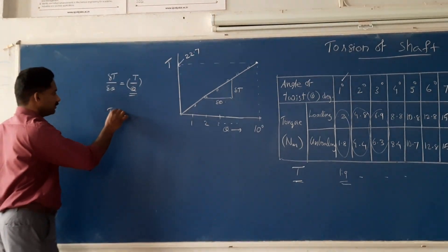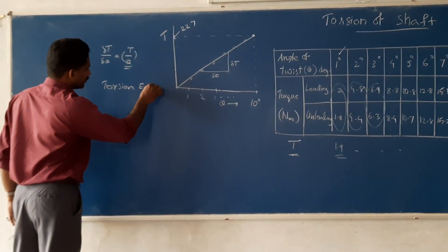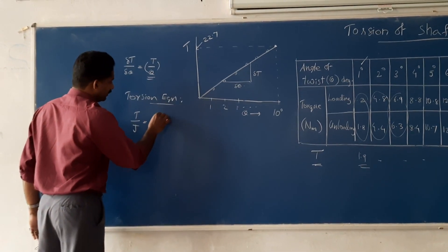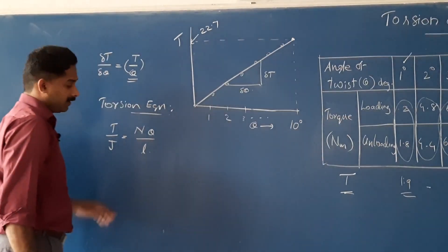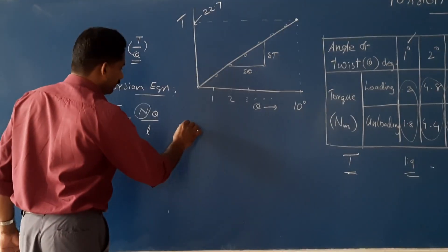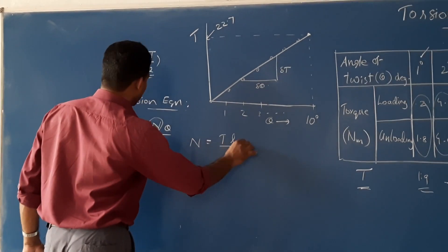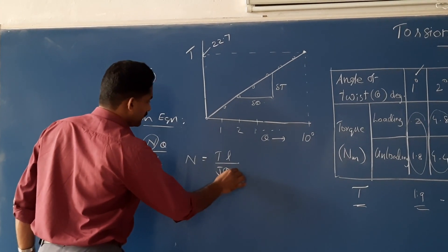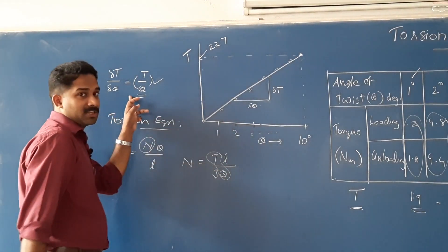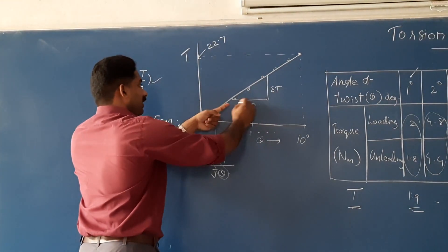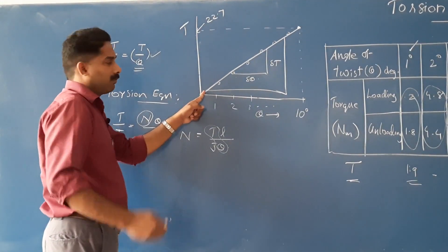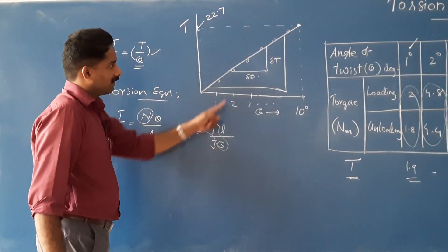Now write the torsion equation. Torsion equation is T by J equal to N theta by L — where N is the shear modulus and L is the length. So how to write N? N is equal to T times L divided by J times theta. That is T by theta, which is the slope of the graph. You will already be able to read T by theta from the graph — it gives the maximum error-free value.